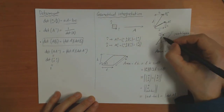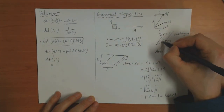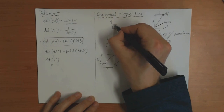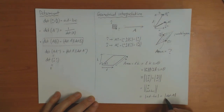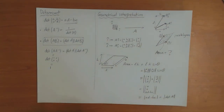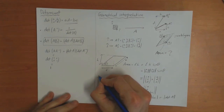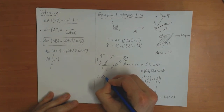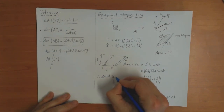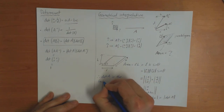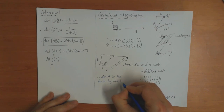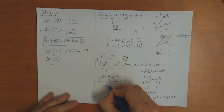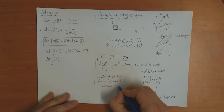So this gives you a geometrical interpretation of the determinant of A. The determinant of A tells you the scale factor by which the area is increased. Originally the area was 1 — this little square — and after the transformation the area is now given by the determinant of A. In summary, the determinant of A is the factor by which A increases area.